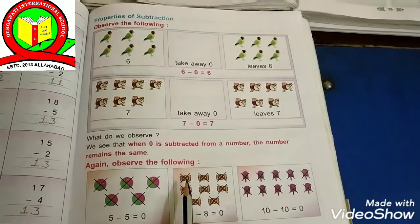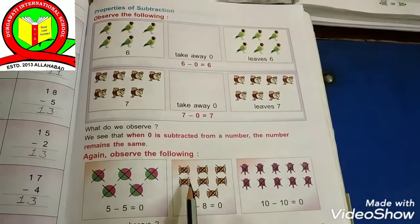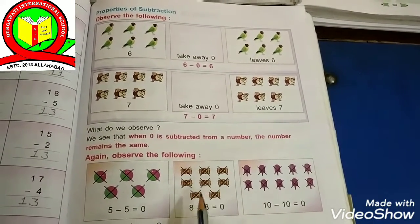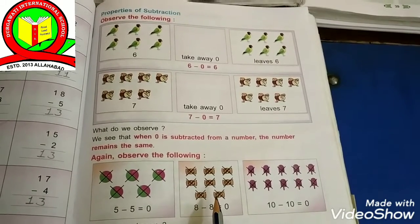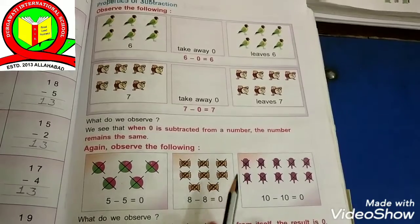Another example is how many toffees? 1, 2, 3, 4, 5, 6, 7, 8. Now take away 8 toffees. 8 minus 8 is equals to 0.